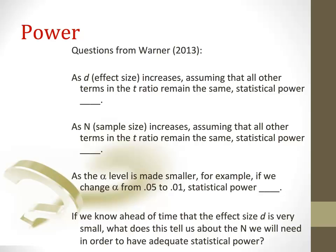One final question. If we know ahead of time that our effect size is going to be very, very small, we looked at other research studies and we found out the effect size expected for our study is going to be small. What does that tell us about the N that we need in order to have an adequate statistical power? Well, we're going to take a look at answering this question in a moment.